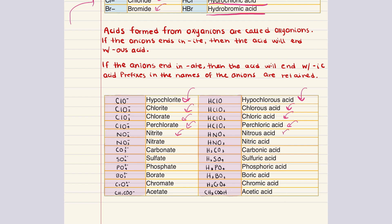Some other common oxy acids: nitrite forms nitrous acid, nitrate forms nitric acid, carbonate forms carbonic acid, sulfate forms sulfuric acid, and phosphate forms phosphoric acid. Additional examples include borate forming boric acid, chromate forming chromic acid, and acetate forming acetic acid. In summary, the naming of acids is systematic and based on the names of their parent anions. For binary acids, use the prefix hydro- and the suffix -ic. For oxy acids, use the suffixes -ous or -ic depending on the number of oxygen atoms, and remember that prefixes in oxy anion names are retained in the acid names.